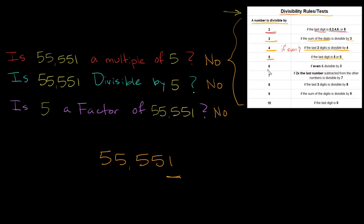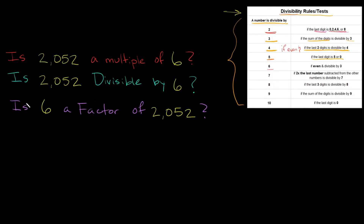Let's move on to number 6. Is 2052 a multiple of 6, or is it divisible by 6? Is 6 a factor of 2052? A number is divisible by 6 if the number is even AND divisible by 3. First, let's check if 2052 is even — yes, because it ends with an even number. So it passes the first test.